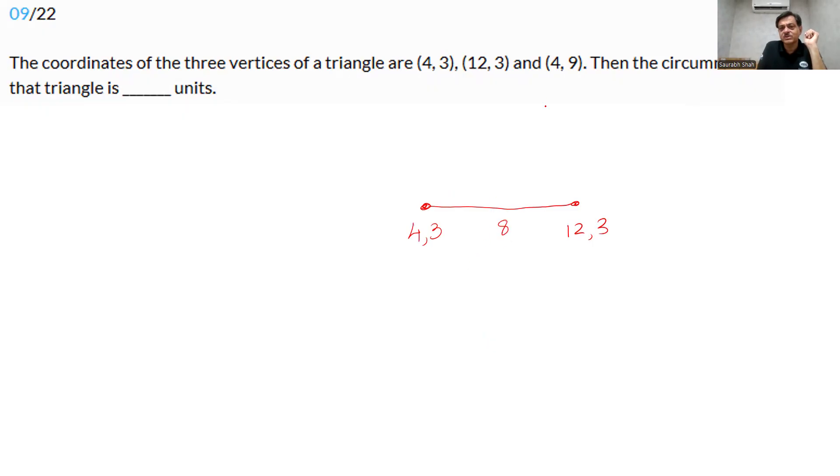And look at the third point. 4, 9. This is 4, 3. And the third point is 4, 9. 4 is the same. X coordinate is the same. It's a vertical line. 4, 9. 9 minus 3. This is a length of 6. So this becomes a rectangle triangle and that too a Pythagorean triplet like 3, 4, 5, 6, 8, 10.